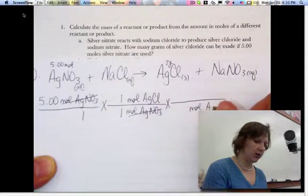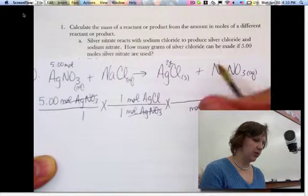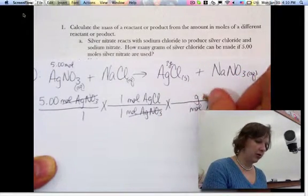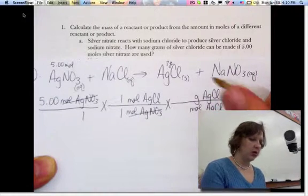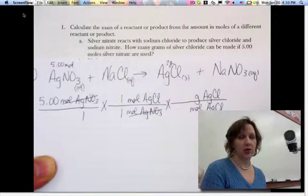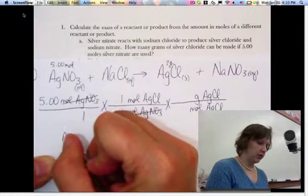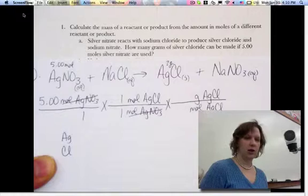So moles of silver chloride goes on the bottom, and this time I'm looking for grams of silver chloride. So I have to put that on top. Now, I don't know off the top of my head what the molar mass of silver chloride is, so I'm going to have to calculate it. So I've got my silver and my chlorine in the formula, and there's only one of each because it's AgCl.